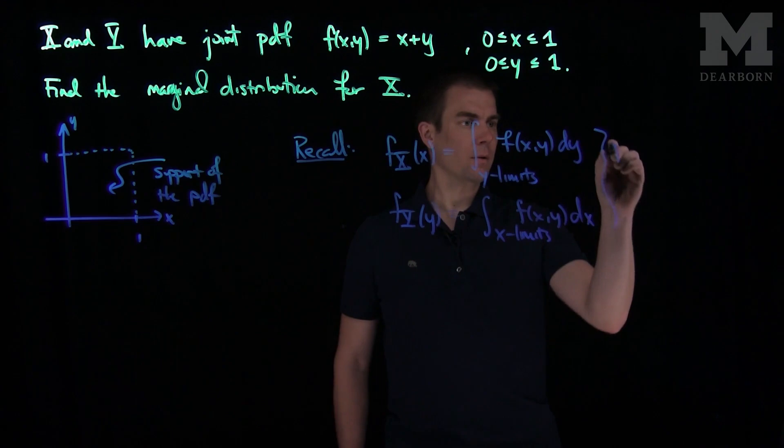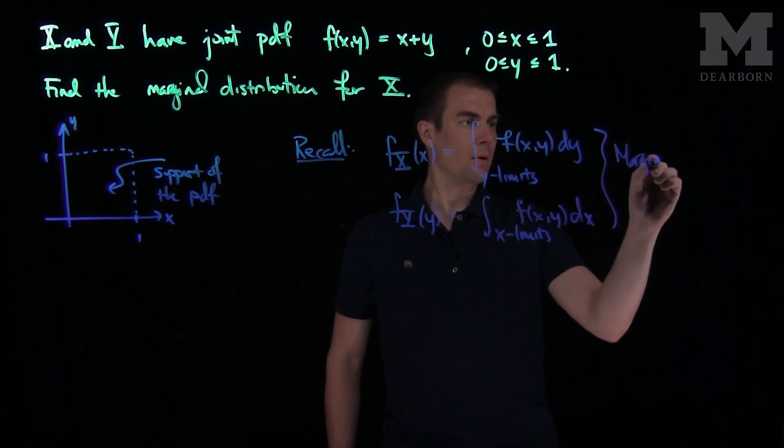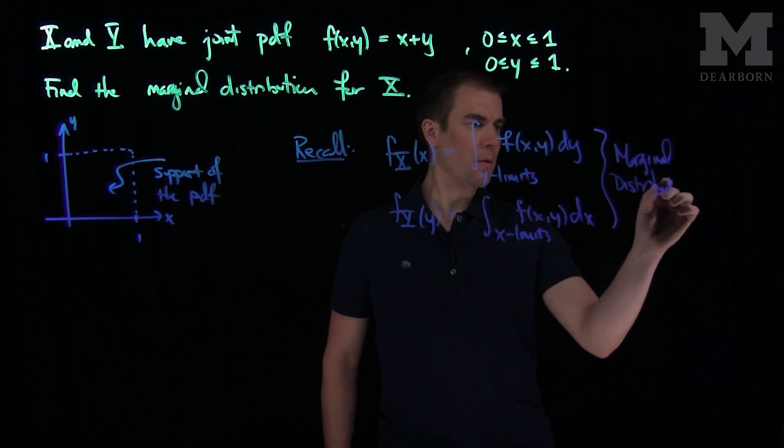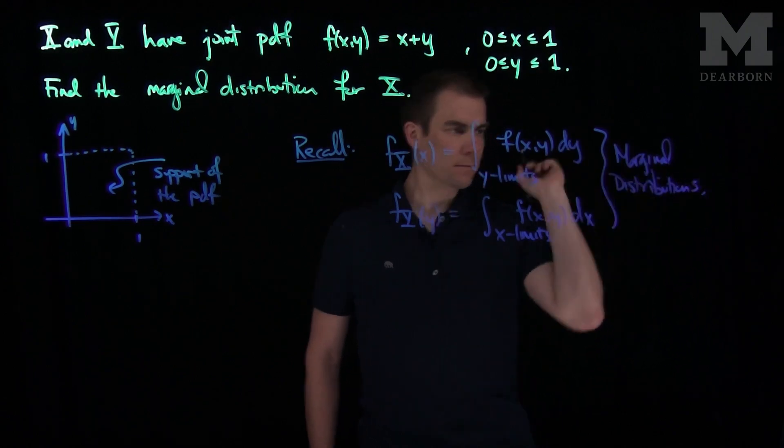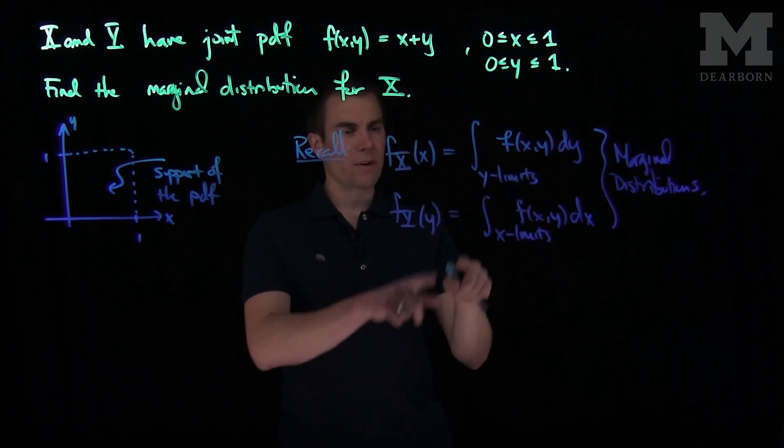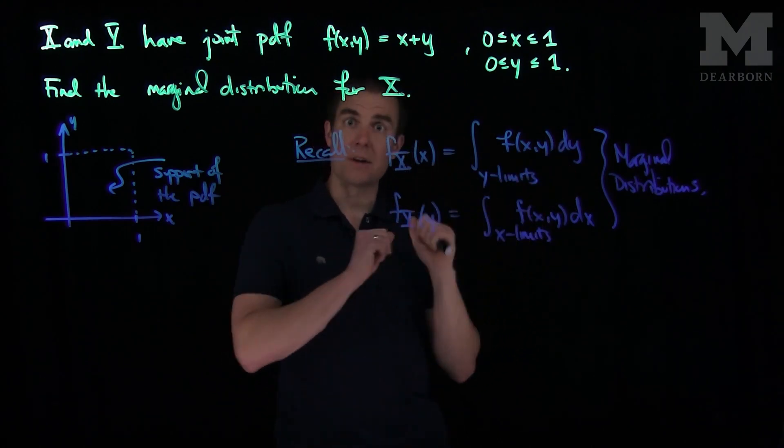When you want to find the x marginal distribution, you integrate out the y's. Whenever you want to find the y marginal distribution, you integrate out the x's.